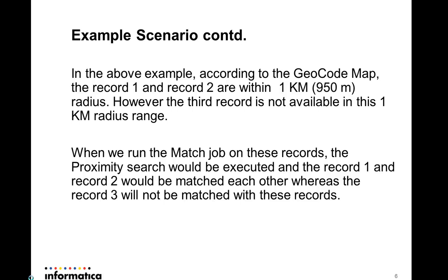The third record is more than one kilometer away from both records one and two. When you run a match with these records using proximity settings, records one and two will match each other, but the third record will not match either of them. That is the expected behavior. We'll now see a quick demo of this scenario.